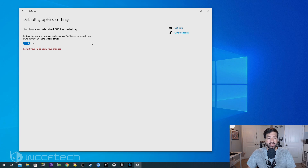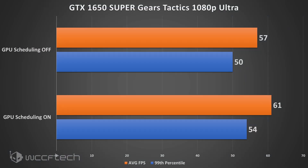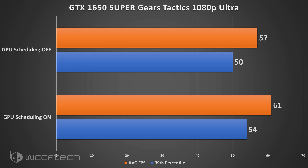If you go down to the 1650 Super, which is a 4 gigabyte graphics card, and run it at 1080p ultra settings in Gears Tactics, we see between an 8 and 9 percent performance improvement on both the averages and the minimums — definitely a welcome addition. It pushes the average over 60 fps and pulls the 99th percentile minimums up quite a bit. The same thing is seen in Forza Horizon 4 at 1080p ultra settings: 95 fps average goes to 104, and minimums go from 81 to 88. It's free performance.